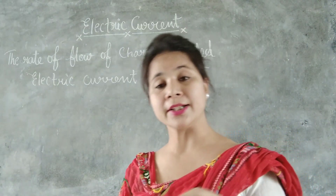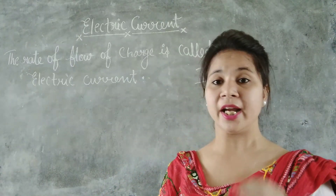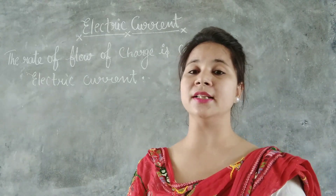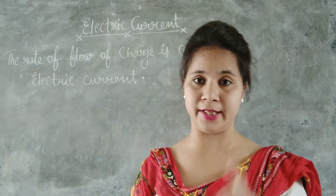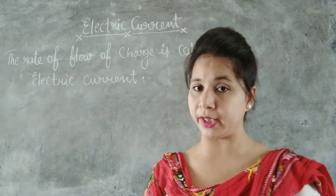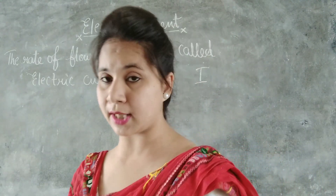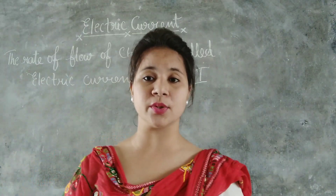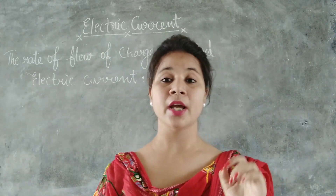Now, electric current is sometimes said to be a scalar quantity, but exactly it does not follow the triangular rule. That's why it is neither a scalar quantity nor a vector quantity. Because it does not follow the triangle rule, electric current is a tensor quantity.